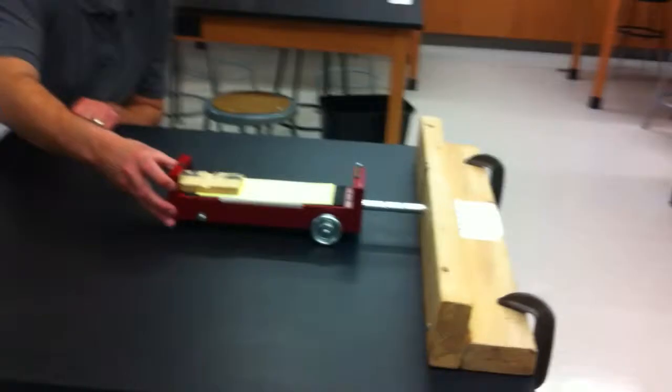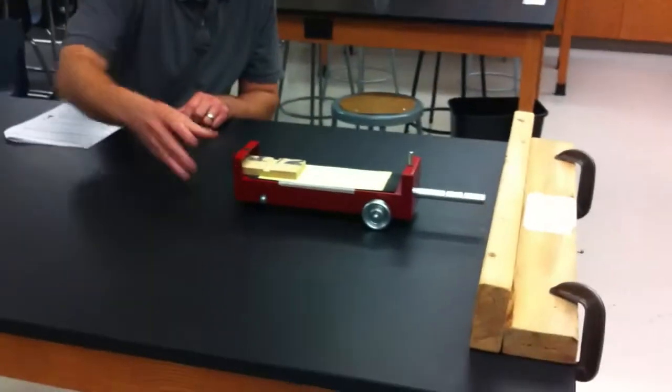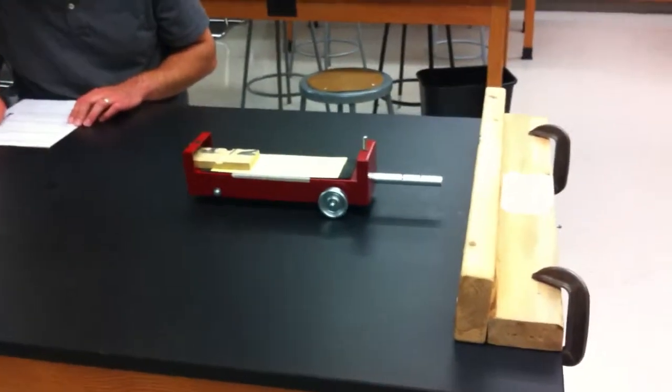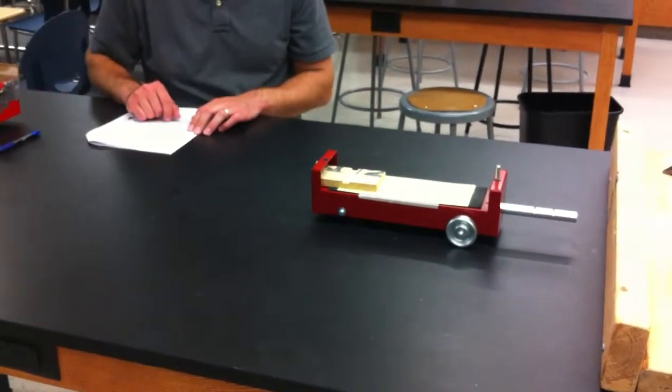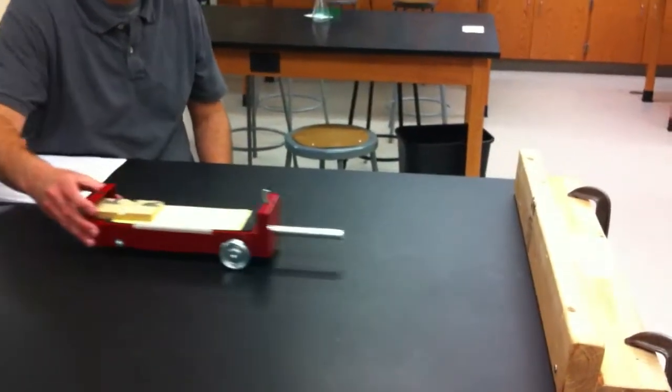So the plunger is going to hit the wall and it will compress and then question number 28, it says make a prediction what will happen to the wooden block when it hits the wall and why? So go ahead right now, make a prediction.